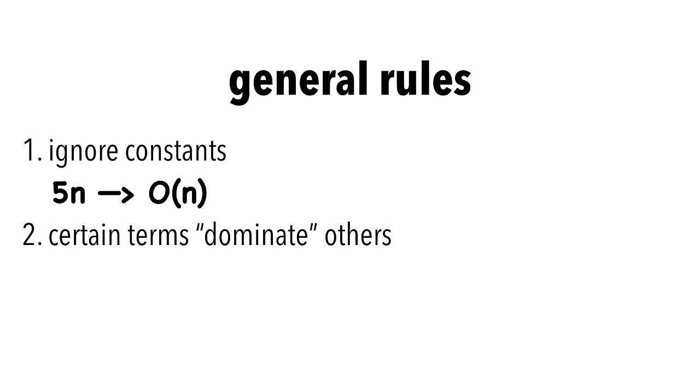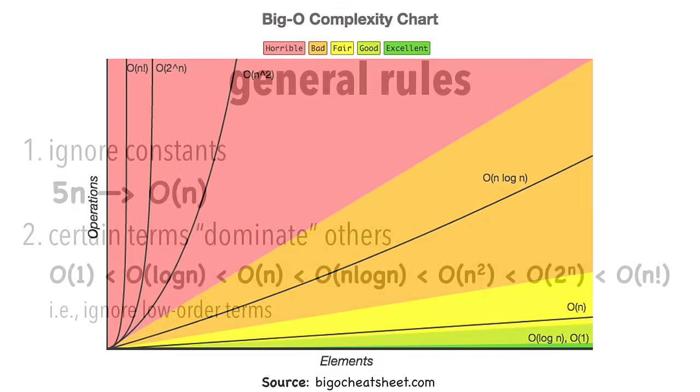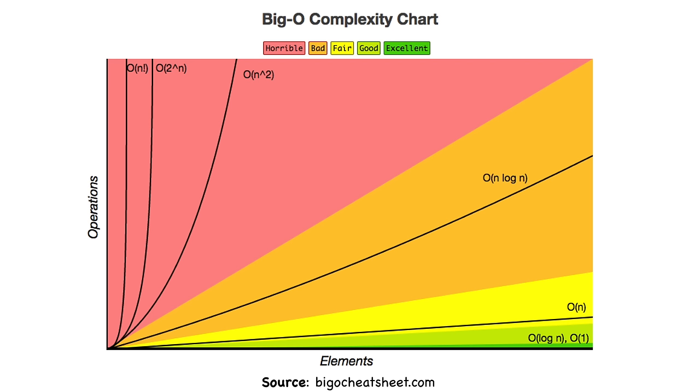Here's a list, but I'll show you a visual on the next page. We ignore or drop low order terms when they're dominated by high order ones. Take a minute and study this chart. It can be found on bigocheatsheet.com along with a handy guide on the Big O of various important algorithms.